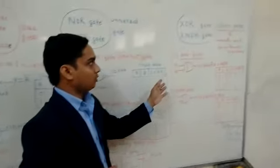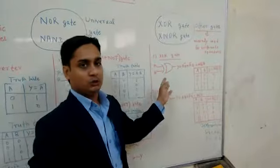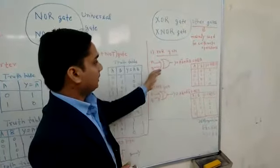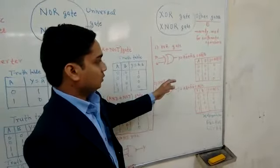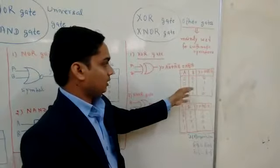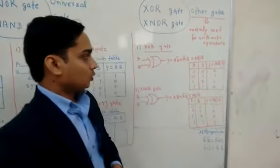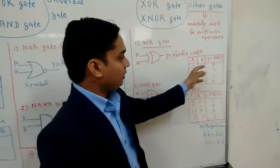There are some other gates, which are mainly for arithmetic purposes. That is, XOR gate and XNOR gate. These are the truth table of XOR gate. We can see that when we are...